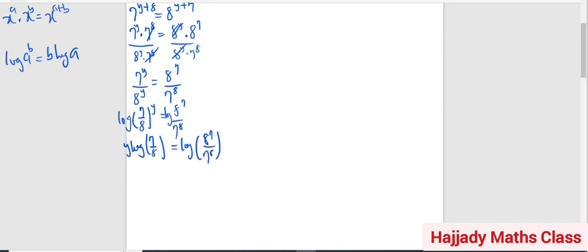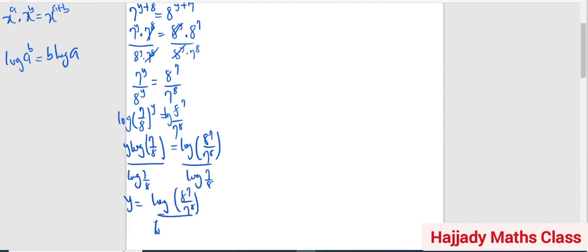Now, I can make y the subject of the formula from this. So dividing both sides by log (7 over 8), I'm going to have y equals log of 8 raised to the power 7 over 7 raised to the power 8, divided by log (7 over 8).